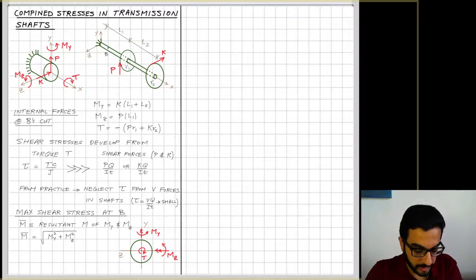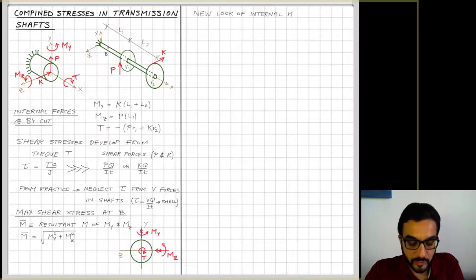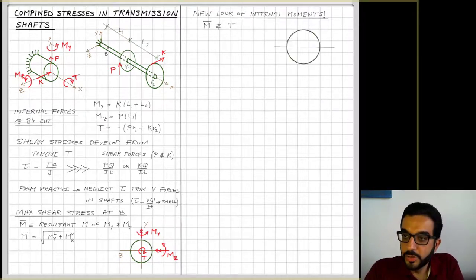So from vector notations, if we're going to review statics, you will remember that. And the idea now is we'll have a new look of internal forces. So we'll combine both My and Mz into an M resultant value here, and it goes here between the, following the directions of My and Mz, it's going into the first quadrant of y and z.